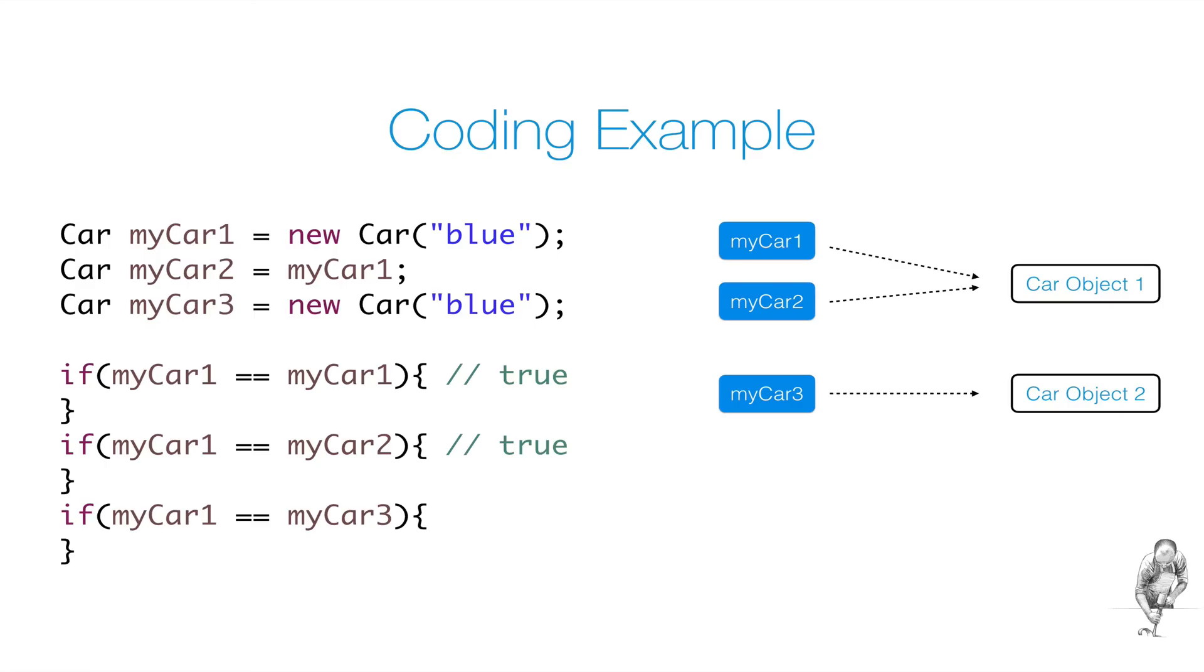Finally, we compare myCar1 to myCar3. What will this return? Pause the video and think about it. MyCar1 and myCar3 both reference a blue car, but each variable references a different object in memory. Therefore, the equals operator will return false.